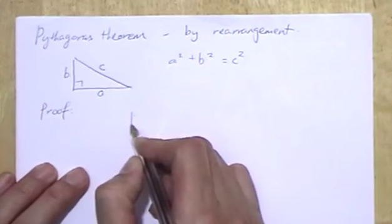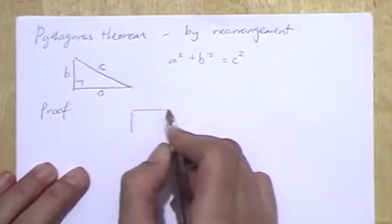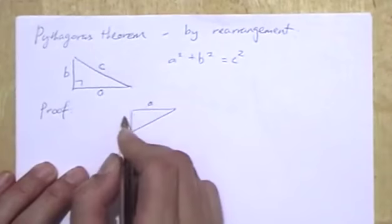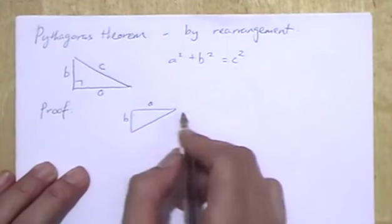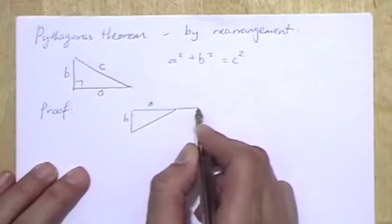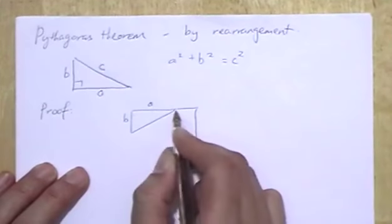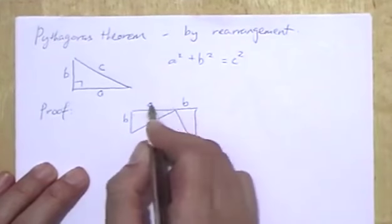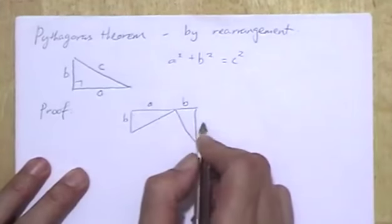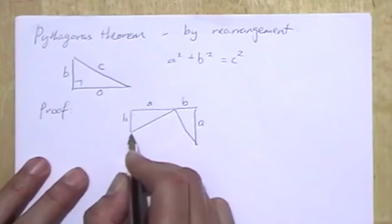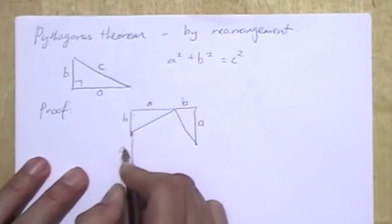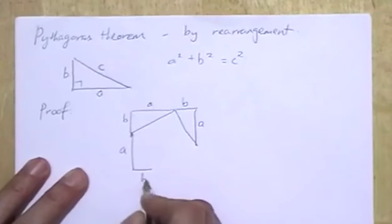I'll turn one around and put it like that, with side A here and side B there. Now I'm going to turn another one around so that I put it down here with side B next to side A, and the two sides forming a straight line.